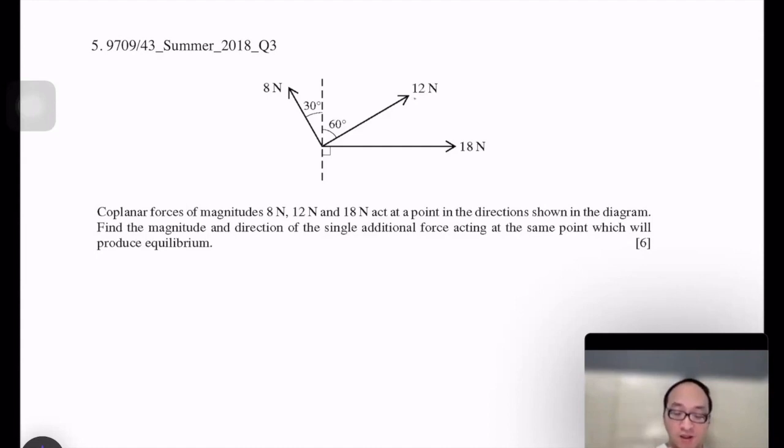So the 12 here can be resolved into here and here. So this is 60. So this is 12 cos 60 and the other one is 12 sin 60. And for 8, to here and here, this is 30, so 8 cos 30 and 8 sin 30.